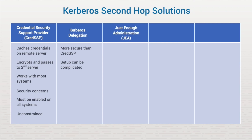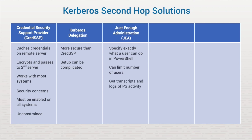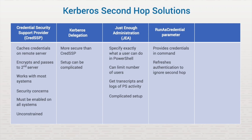Another option is to configure Just Enough Administration in PowerShell. This allows the administrator to specify exactly what cmdlets and functions a user can run, limit the number of administrators on machines, and get transcripts and logs of commands executed during a session. This option does require configuration on each server, so it can be complicated to set up. Another solution is to use the Run As Credential parameter from the remote server and provide your credentials, which essentially refreshes the authentication and bypasses the second hop problem. The downside is that you must edit the PowerShell session configuration to allow the Run As Credential, which can be a hassle with multiple servers.